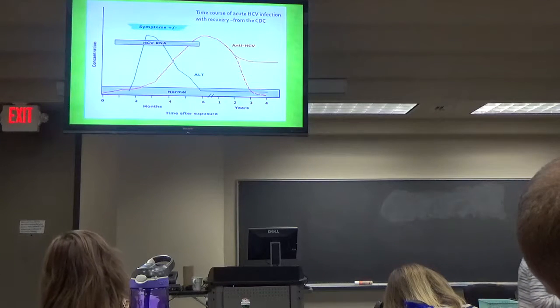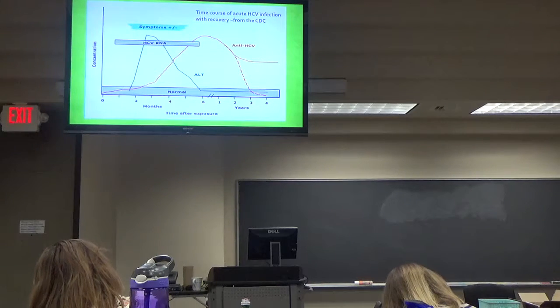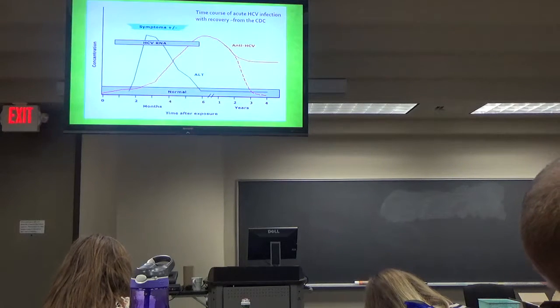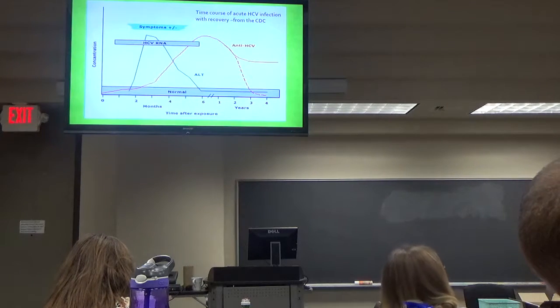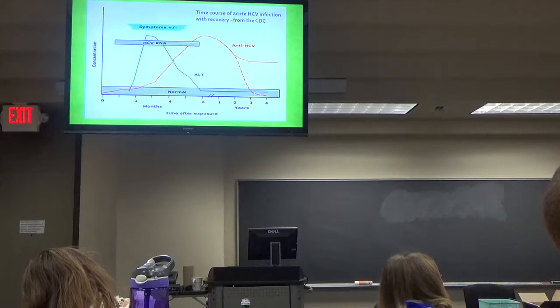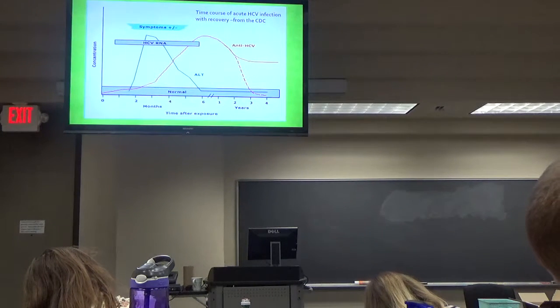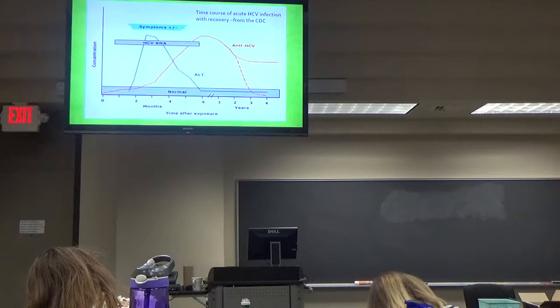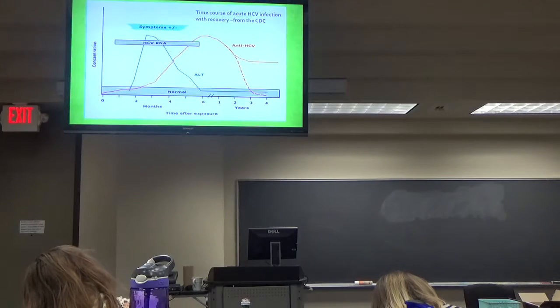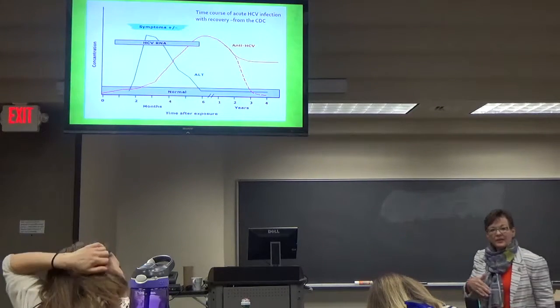So those are the two things. Do they have antibodies? Do they have RNA viral load? You can see by this that the viral load in this person isn't present after about six months. So the body can clear the viral infection. So often, we don't treat the acute infection.